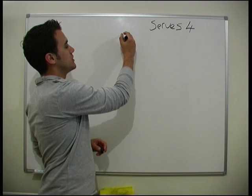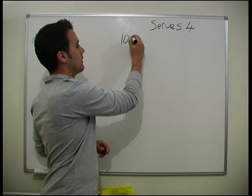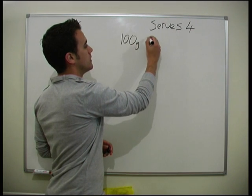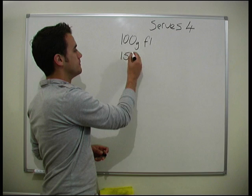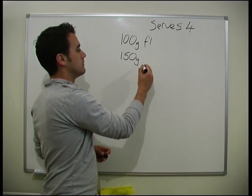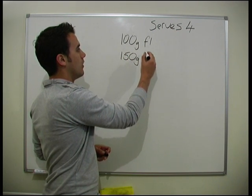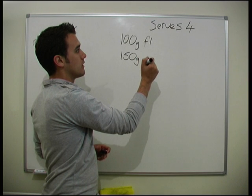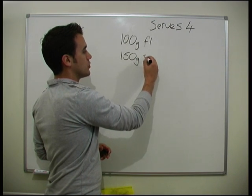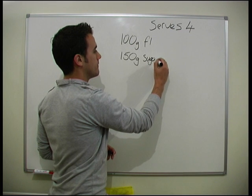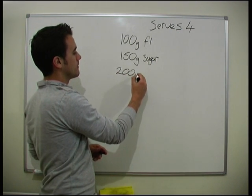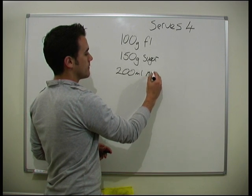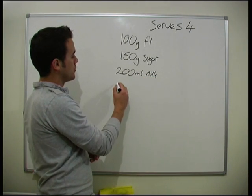In this recipe, we're told we need 100 grams of flour, we need 150 grams of sugar, and we're told we need 200 ml of milk, and we're told we need 2 eggs.